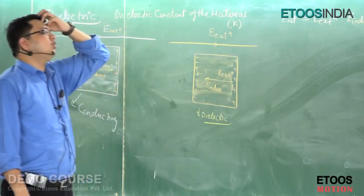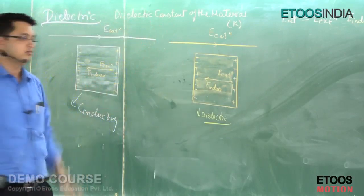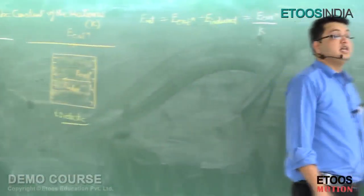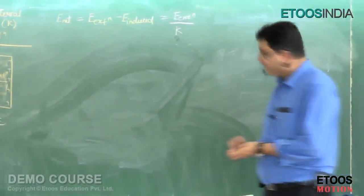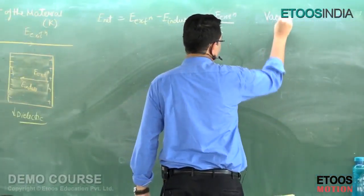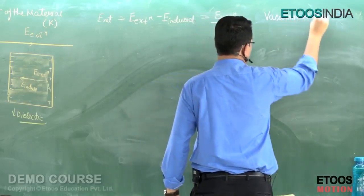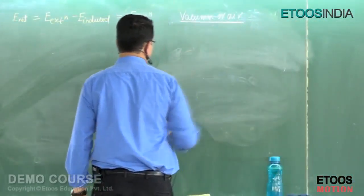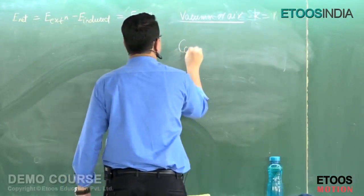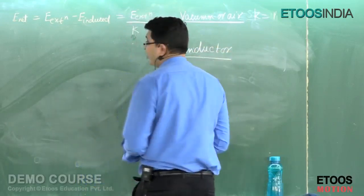For example, if I tell you the dielectric constant is 6, and I put in 100 units of field, then it will be 100 divided by 6. And if this material is a conductor, then K is infinite, so the internal field becomes zero.